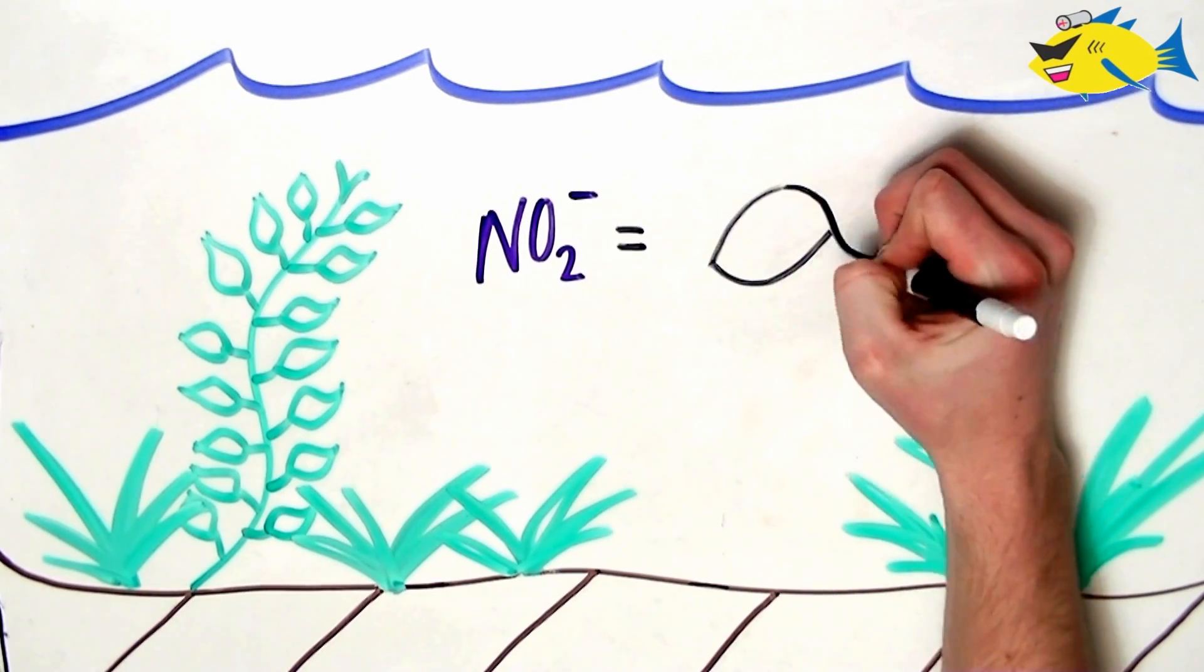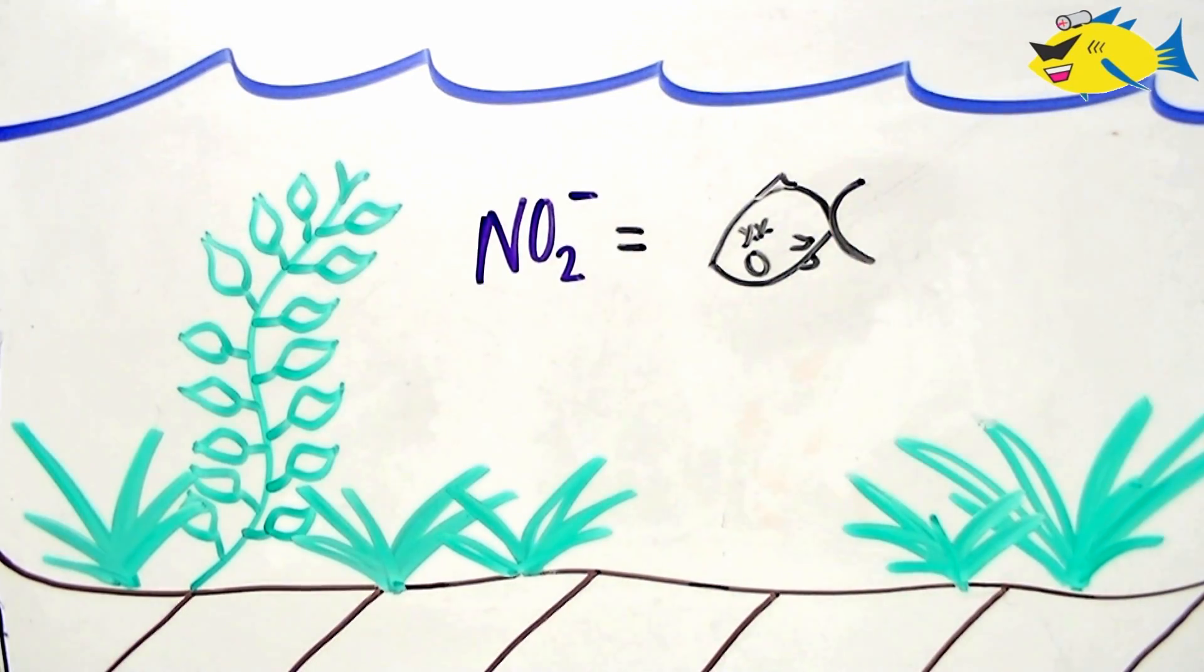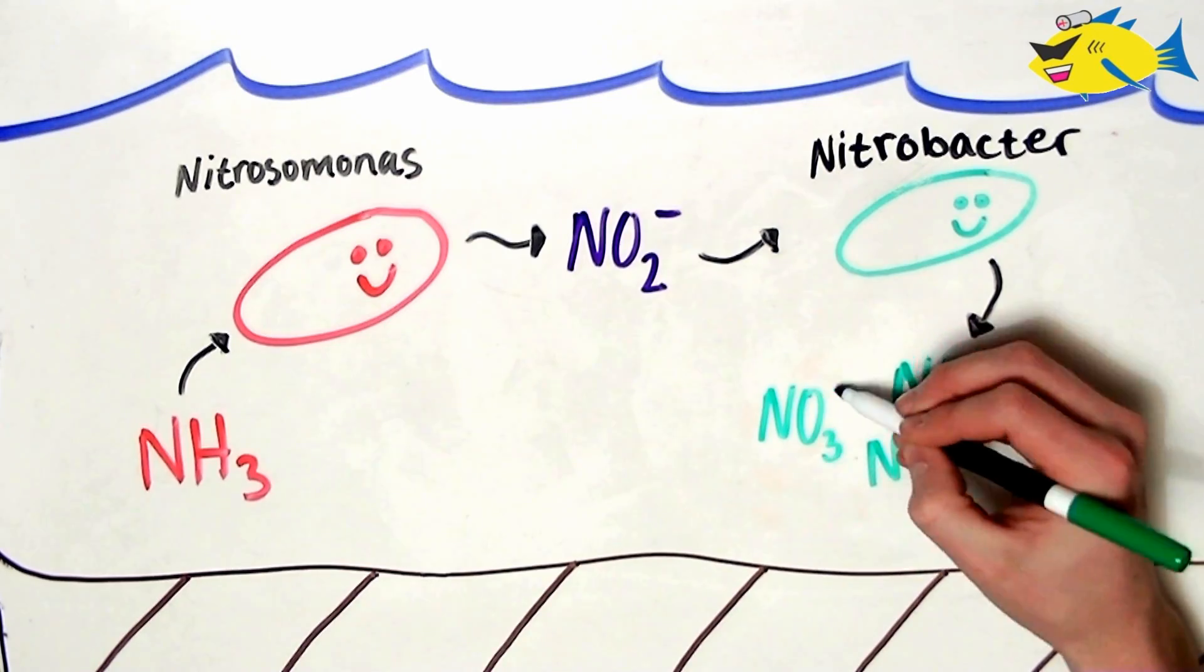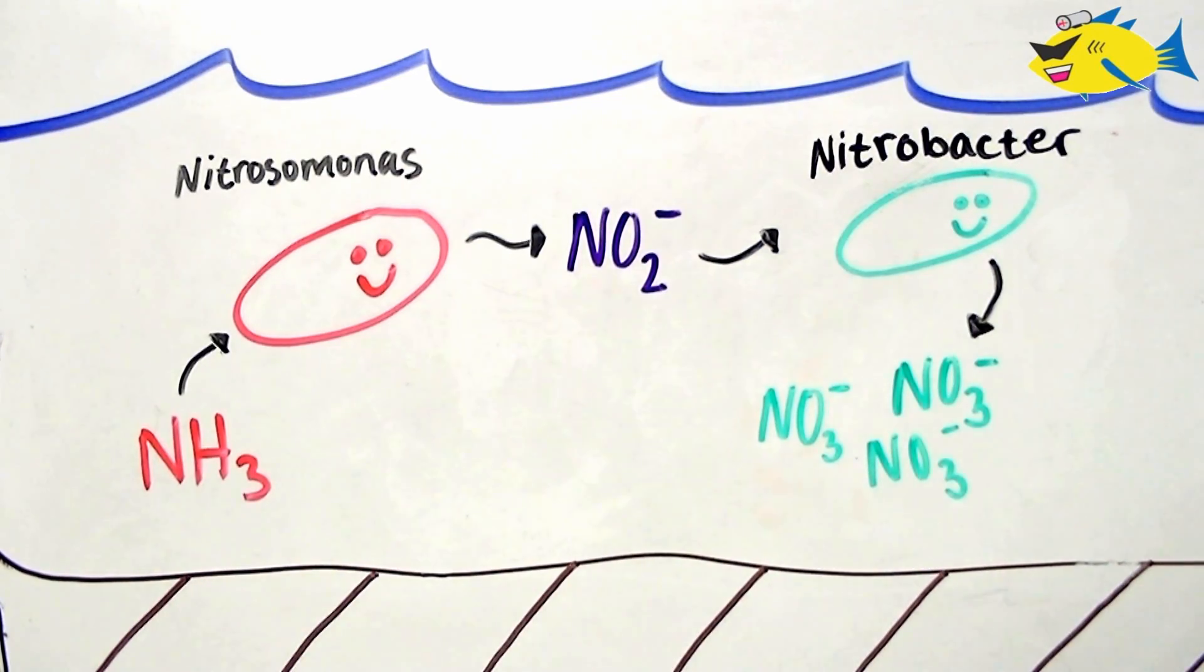Now, nitrite is less toxic than ammonia, but can still harm fish even at low concentrations. Nitrite is further oxidized by nitrobacter to the less toxic form, nitrate.